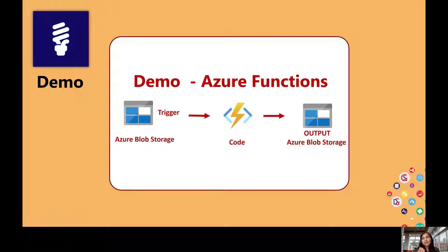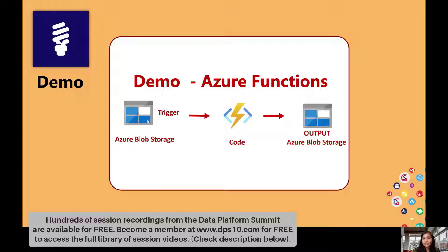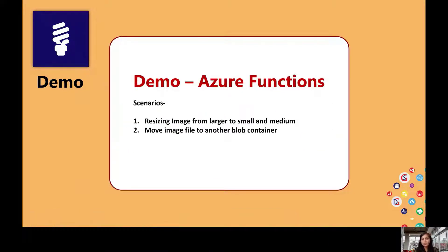When I place a particular blob in the input container, it triggers and the piece of code executes, generating two separate files and placing them into another container. Every time I upload an image file into my blob storage, it triggers an Azure Function. That function resizes my image and stores the result into the output blob container. My scenario is resizing an image from large to small and medium sizes. When users upload the file into the container, I want two different sizes — small and medium — stored into another blob container.